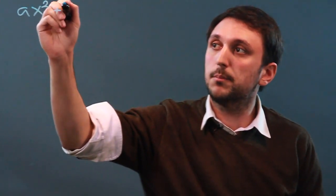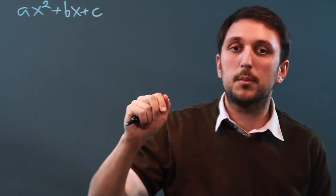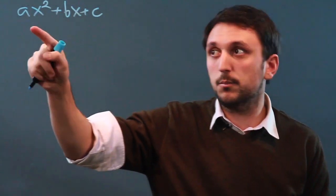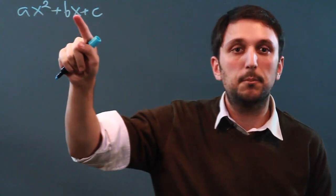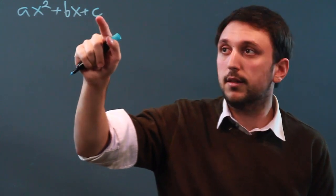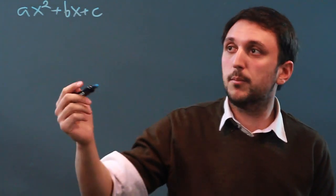ax squared plus bx plus c. So how do you remember that? Well, a, b, c. Remember, a is the most important, so it has the most stuff. b is the next most important, so it has the second most stuff. And c is the least important, so it has the least stuff. That's a good way to remember it.